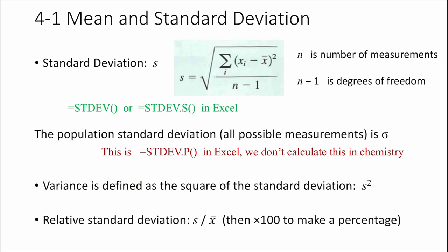Some other things related to standard deviation: variance is just the square of standard deviation. The relative standard deviation is the standard deviation divided by the average, then turned into a percentage. This number is useful because if your standard deviation is 1 and your measurement average is 1, that's a big problem. But if your standard deviation is 1 and your measurement average is 20,000, who cares? That's fine. So that's why it's useful to set your standard deviation over the average — that's the RSD, relative standard deviation.